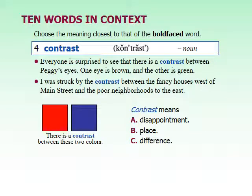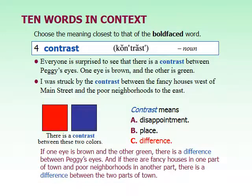Our next one is contrast, and in this case it's a noun, though it can also be a verb. 'Everyone is surprised to see that there is a contrast between Peggy's eyes — one eye is brown and the other is green.' 'I was struck by the contrast between the fancy houses west of Main Street and the poor neighborhoods to the east.' Contrast means a difference.